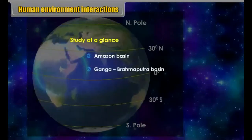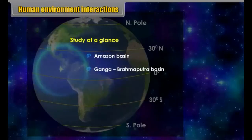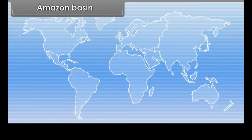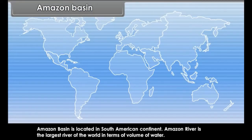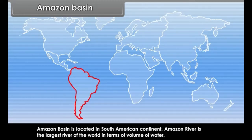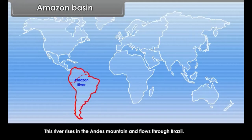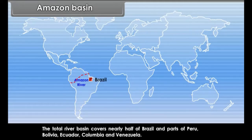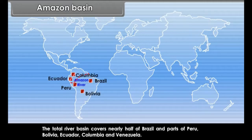Amazon Basin is located in the South American continent. The Amazon River is the largest river of the world in terms of volume of water. This river rises in the Andes Mountains and flows through Brazil. The total river basin covers nearly half of Brazil and parts of Peru, Bolivia, Ecuador, Colombia, and Venezuela.